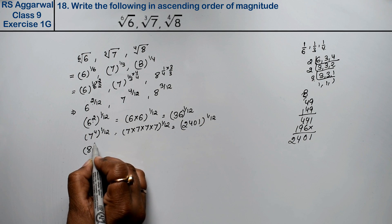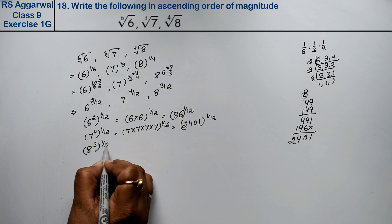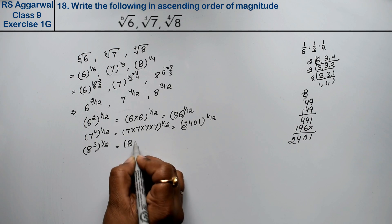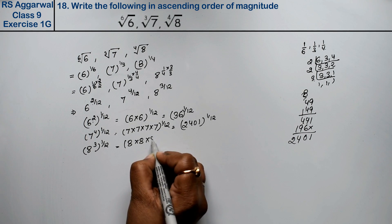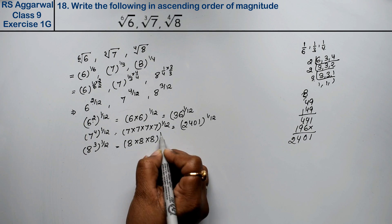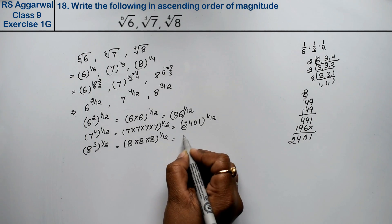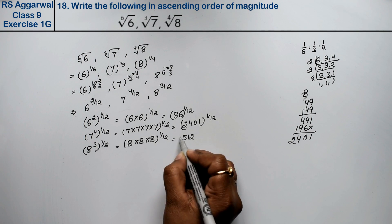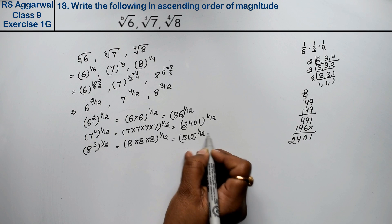Last one: 8^(3/12) = (8³)^(1/12). That means 8×8×8, which is the cube of 8. As we have studied before, 8³ = 512. So this becomes 512^(1/12).